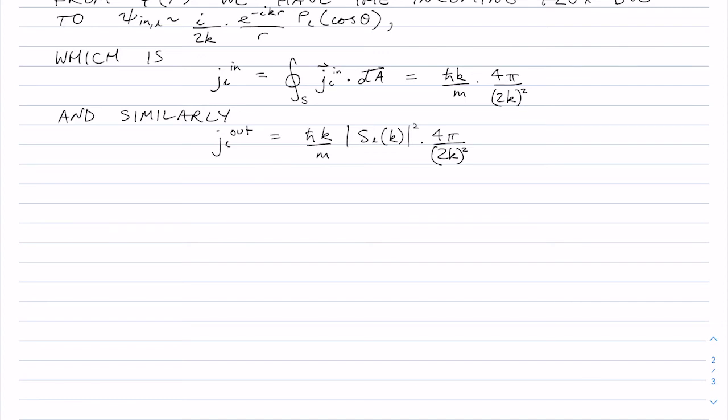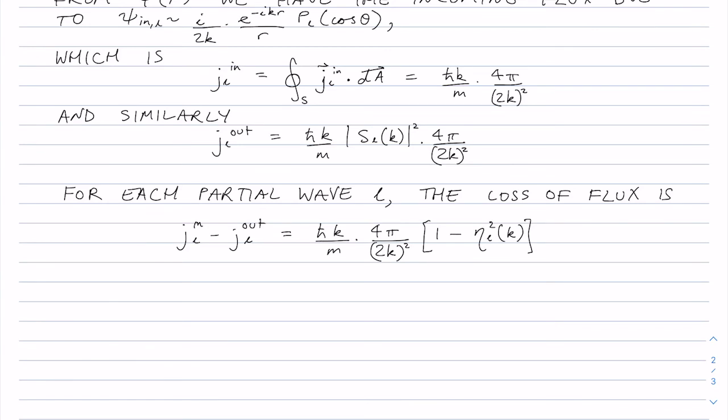And so for each partial wave L, we'll have a difference between the in and the out. So this is using that form for S that we wrote before as eta e to the 2 i delta. And so this is the loss of flux, if you like.